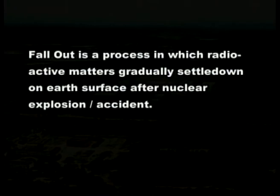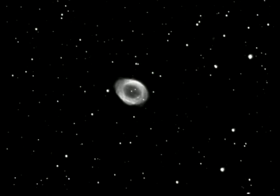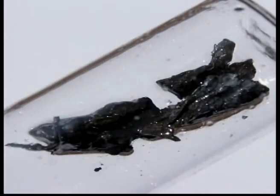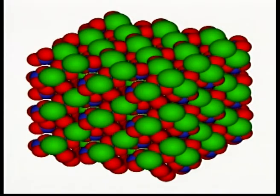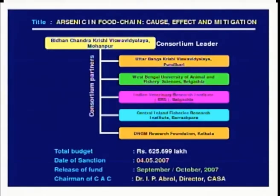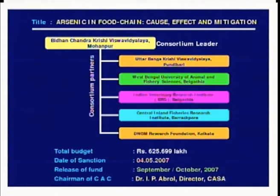Fallout is a process in which radioactive matter gradually settles down on the Earth's surface after a nuclear explosion or accident. Radioactive fallout contains about 200 radioactive isotopes like carbon-14, strontium-89, strontium-90, and cesium-137. After settling, they enter the food chain and food web and result in health hazards. The biological magnification of many isotopes is also reported.